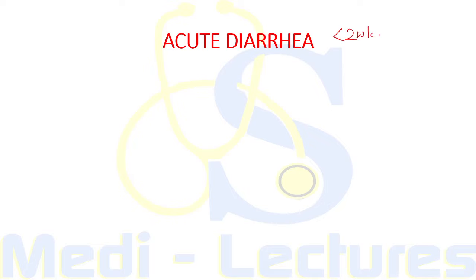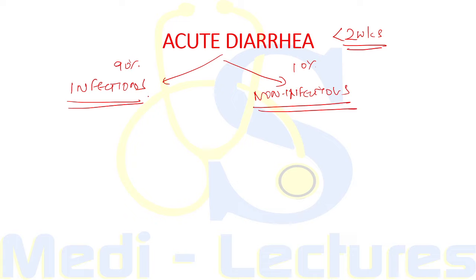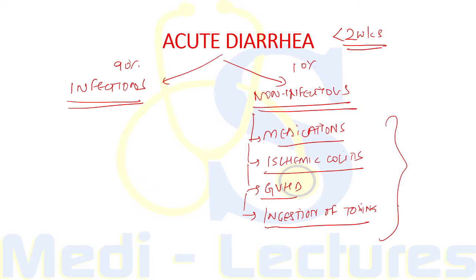Diarrhea is said to be acute when present for less than two weeks. About 90 percent of cases are due to infections and 10 percent are non-infectious. Non-infectious causes include medications such as antibiotics, NSAIDs, antidepressants, chemotherapeutic agents, antacids, and laxatives; also ischemic colitis, graft-versus-host disease, and ingestion of toxins like organophosphates, mushrooms like Amanita, and arsenic.